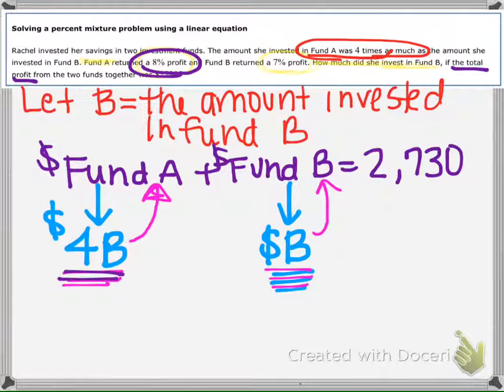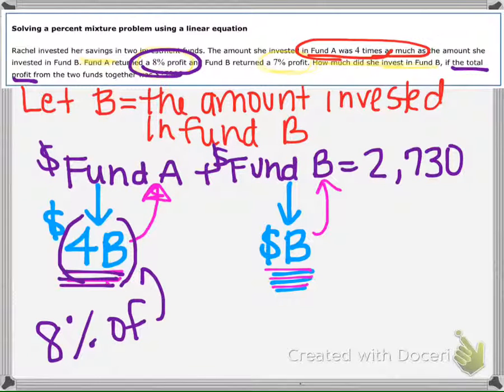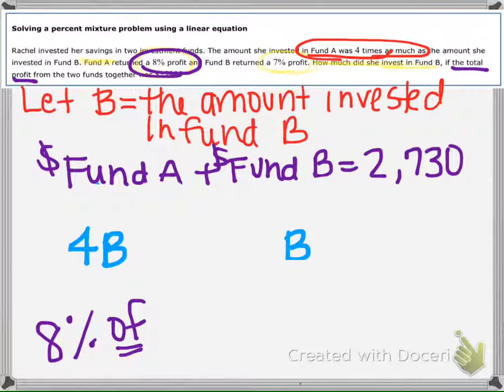It tells us that Fund A earns 8%, so if this is the amount we're putting into Fund A, it's going to earn 8% of this amount. We know that 'of' in math means multiply, so we're going to take 4B and multiply by 0.08.